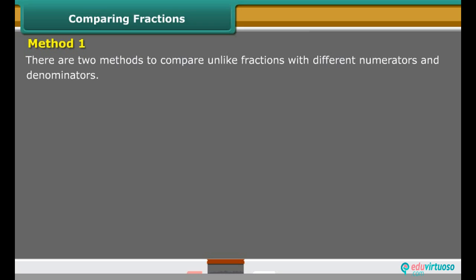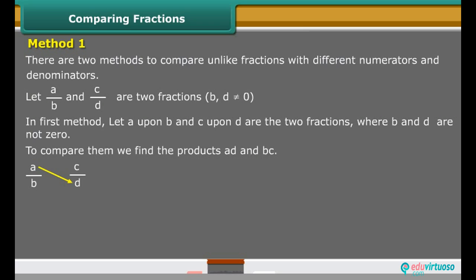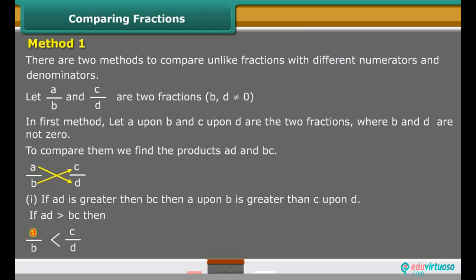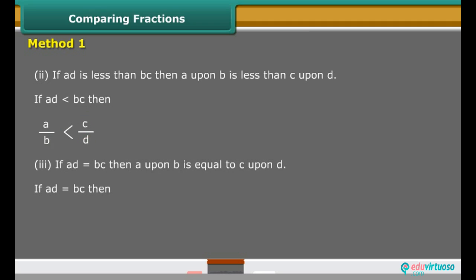Method 1. There are two methods to compare unlike fractions with different numerators and denominators. Let A upon B and C upon D be the two fractions where B and D are not equal to 0. To compare them, we find the products AD and BC. First, if AD is greater than BC, then A upon B is greater than C upon D. Second, if AD is less than BC, then A upon B is less than C upon D. Third, if AD is equal to BC, then A upon B is equal to C upon D.